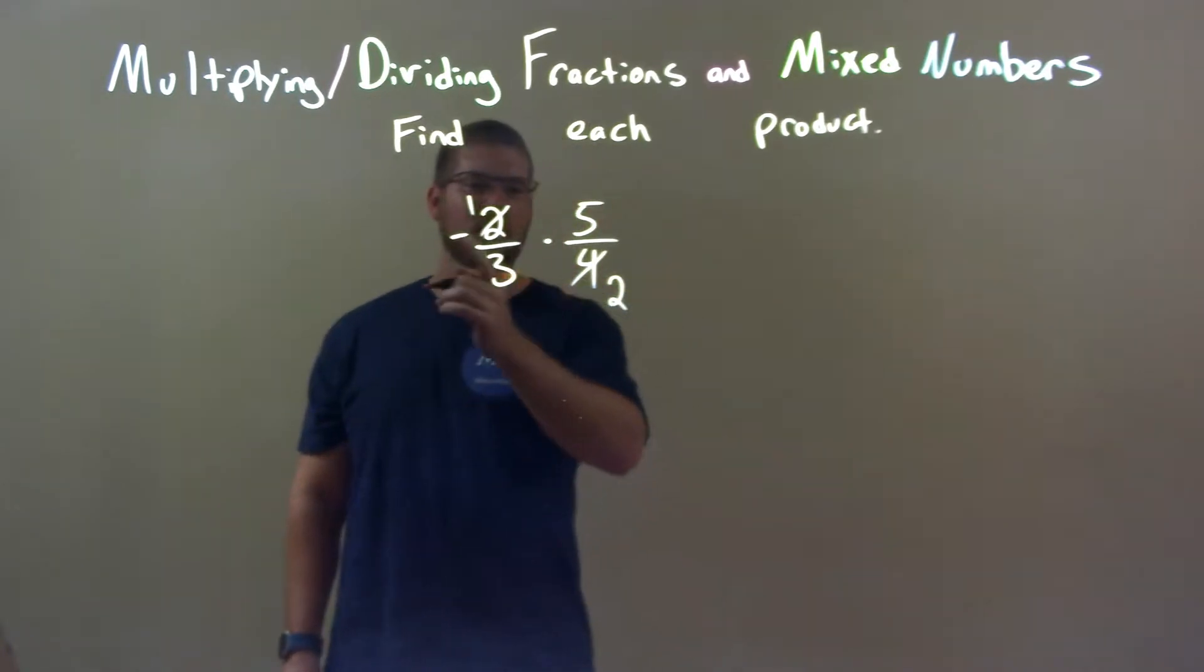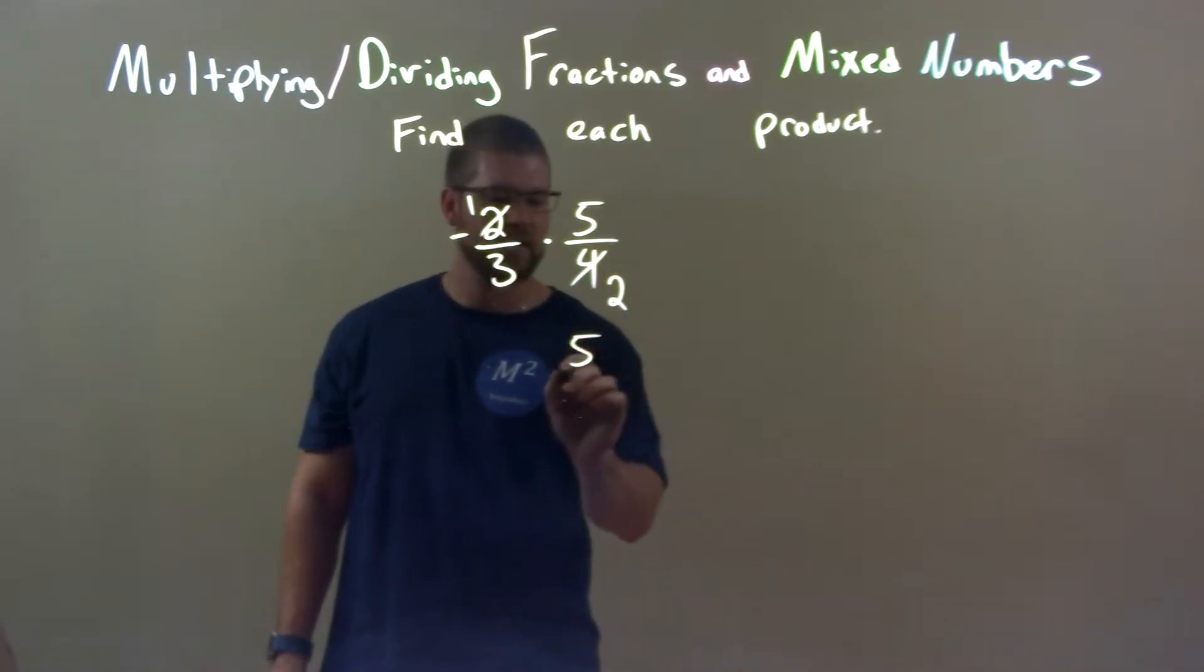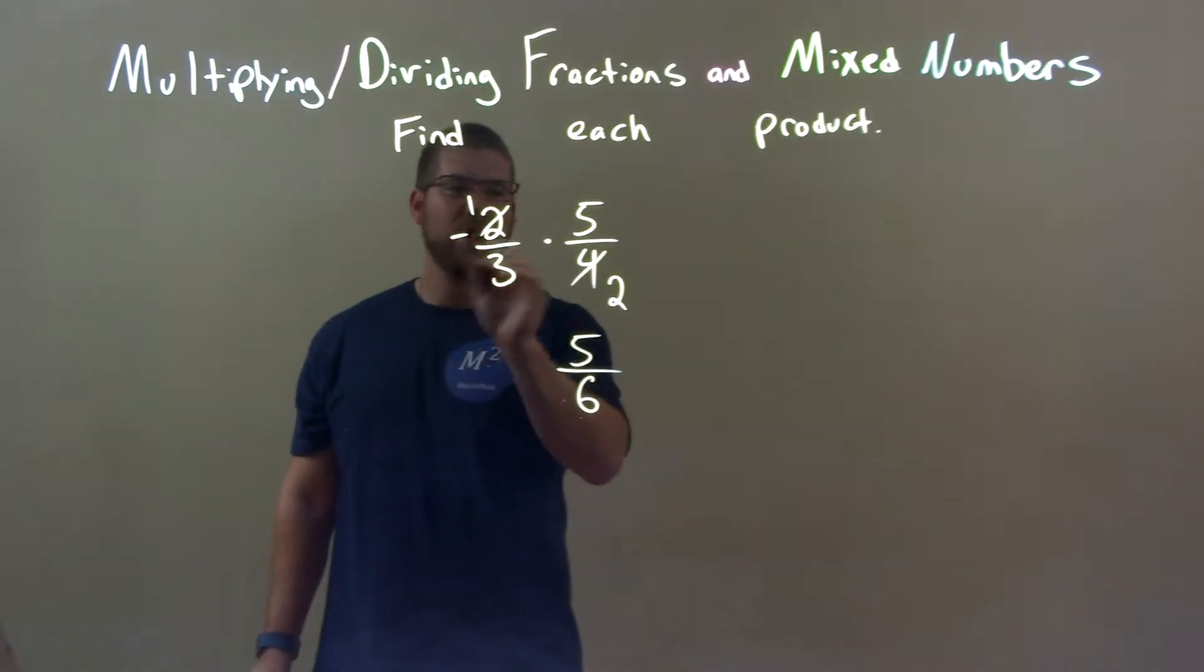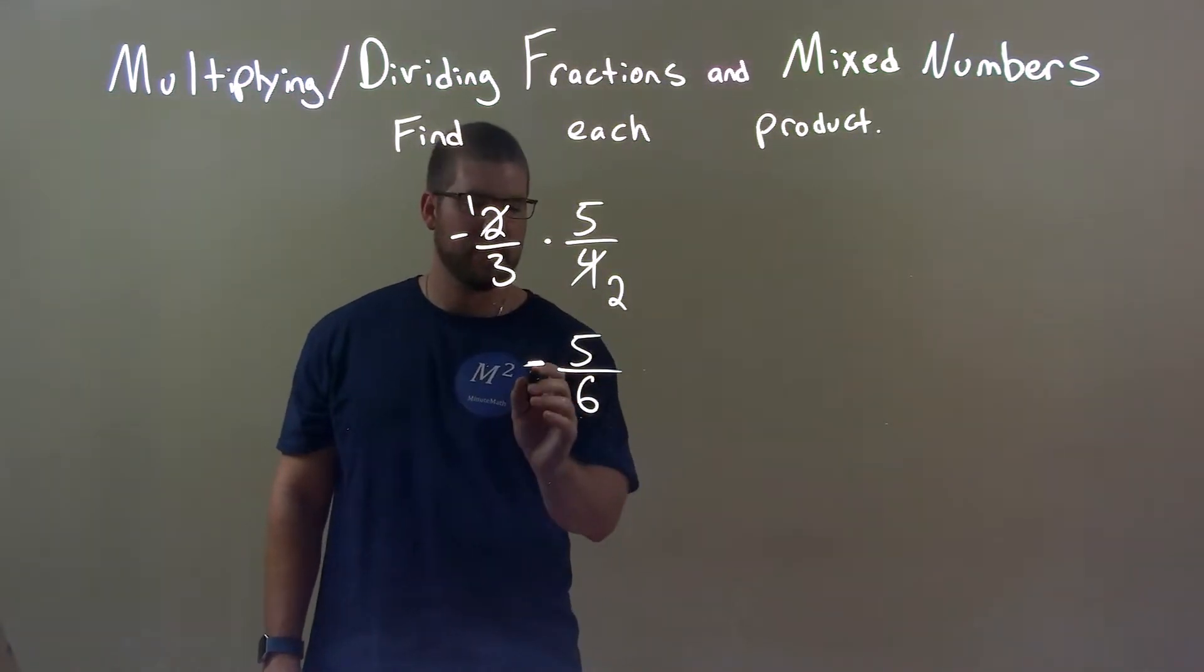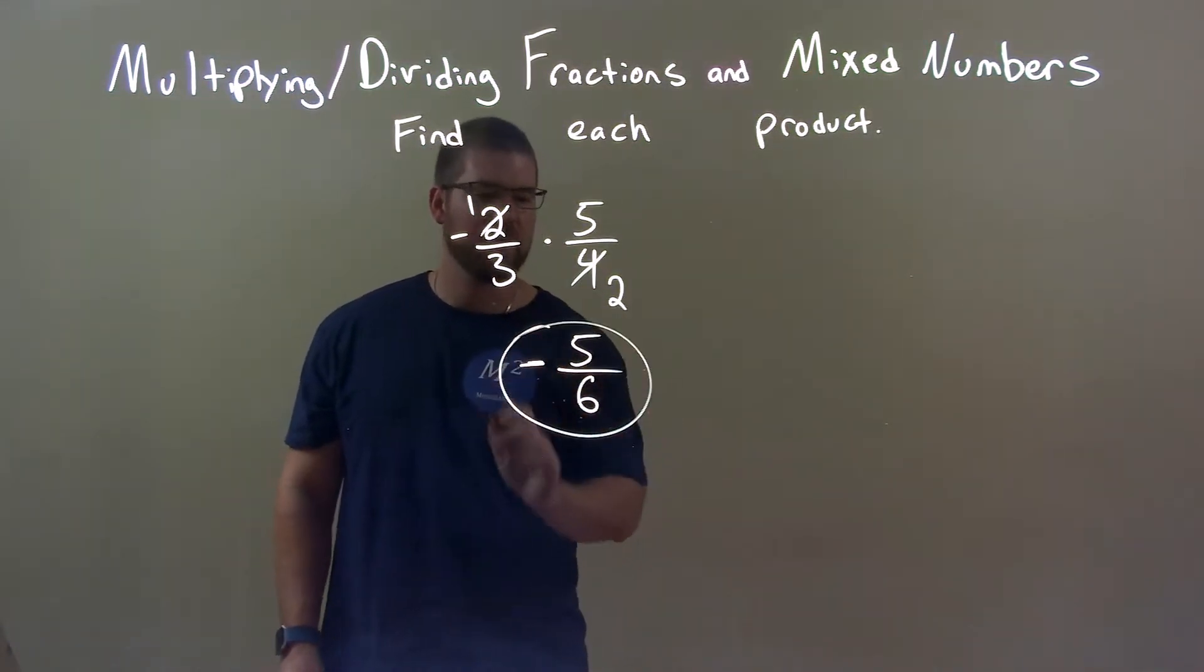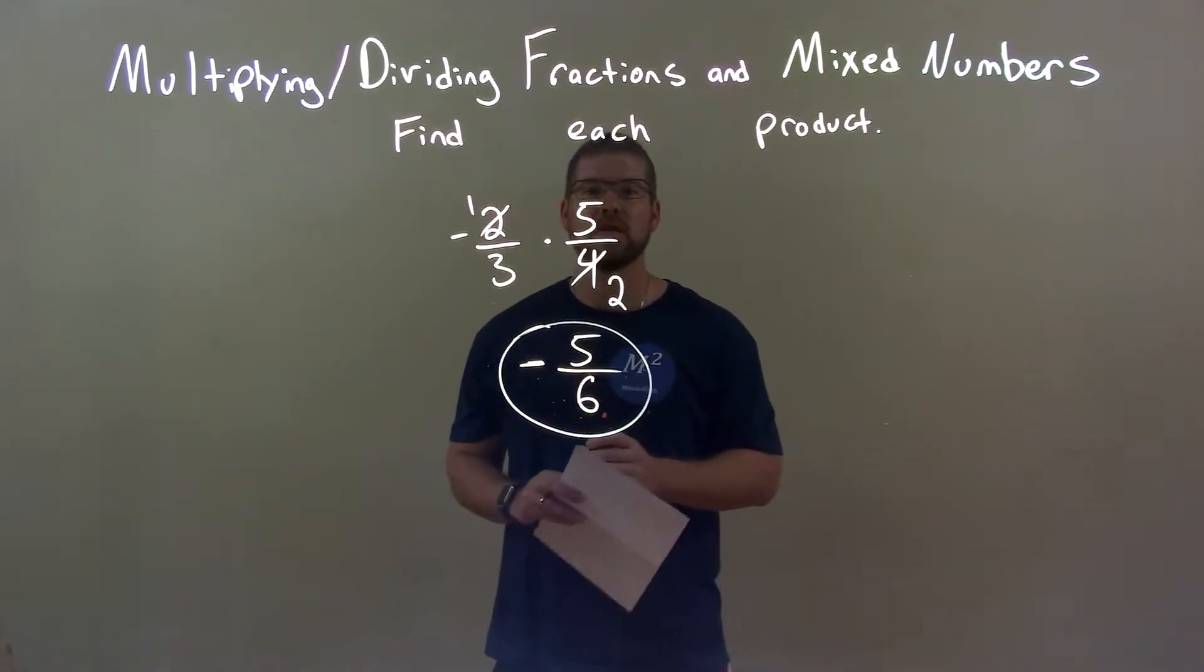So now when I multiply across the numerator, then multiply across the denominator. 1 times 5 is 5. 3 times 2 is 6. And a negative times a positive is a negative. So our final answer is just negative 5 over 6.